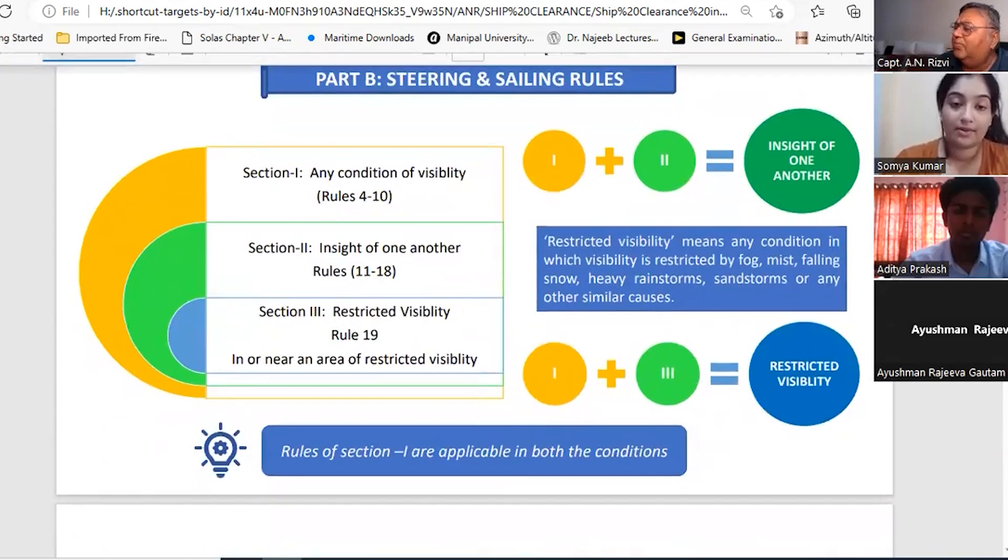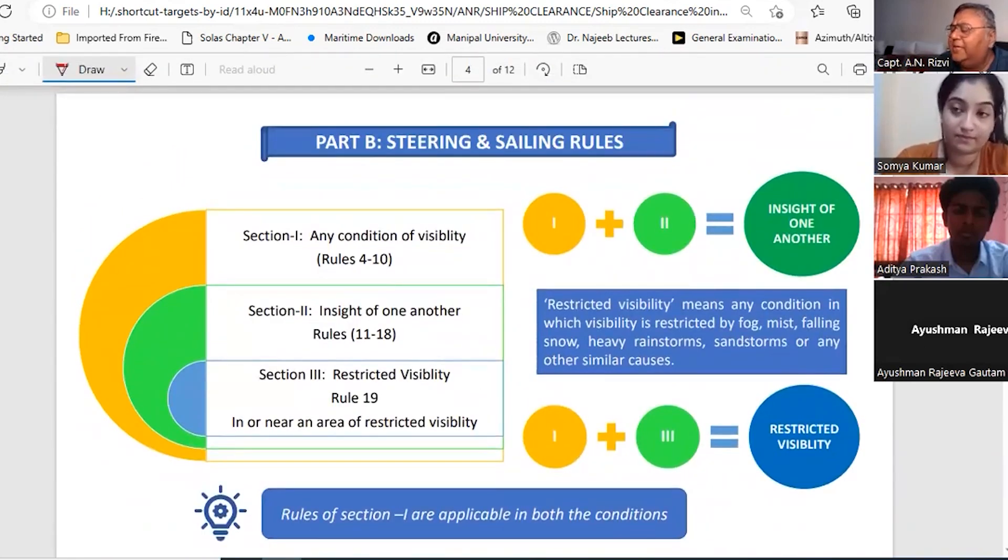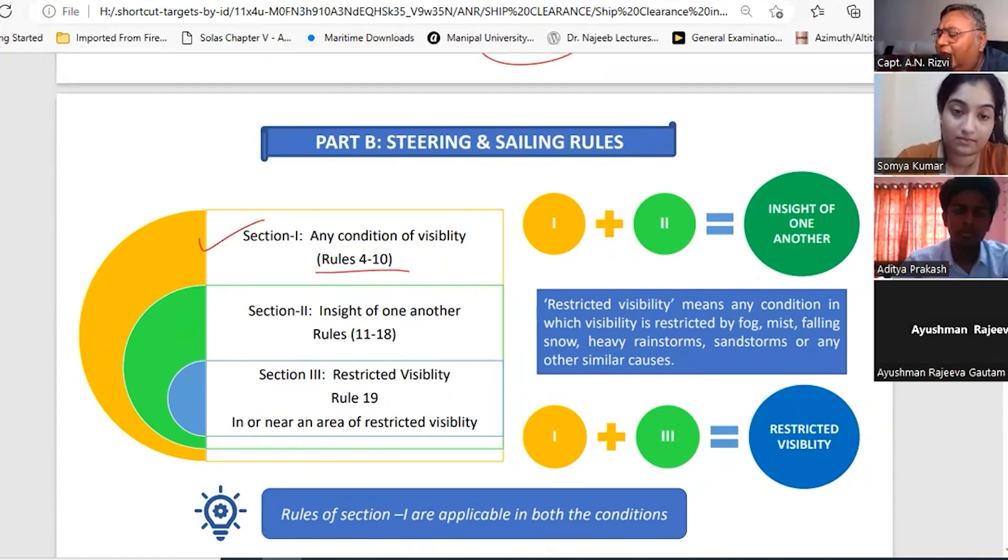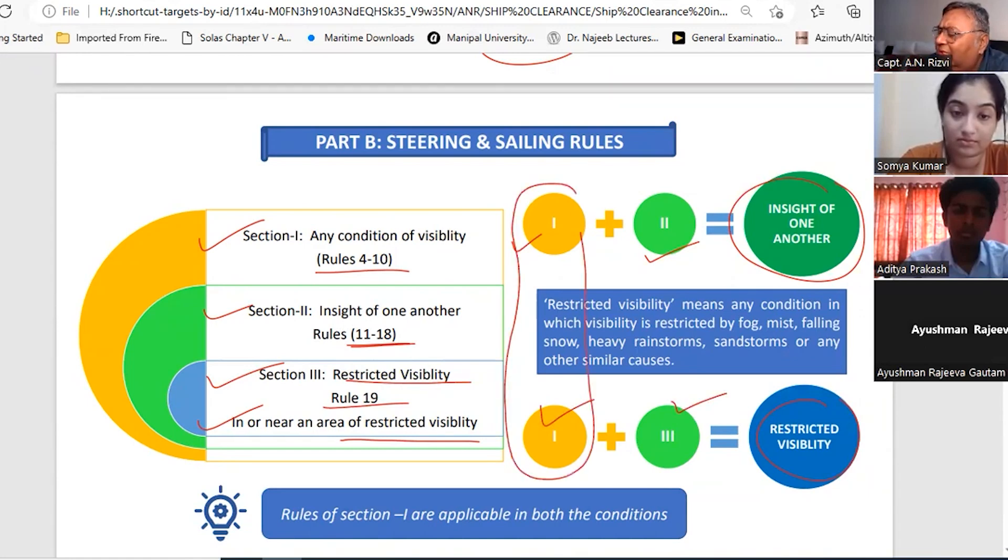Now let's focus on Part B, that is steering and sailing rules. Part B is having three sections. Section 1 is any condition of visibility, that is rule 4 to 10. Then section 2, that is in sight of one another, section 11 to 18. And section 3 is restricted visibility rule 19, that is in or near an area of restricted visibility. If you are in sight of one another, that means section 1 and section 2 will be applicable. And if you are in restricted visibility, then section 1 and section 3 is applicable. In both scenarios you will see that section 1 is common. So rules of section 1 are applicable in both conditions.